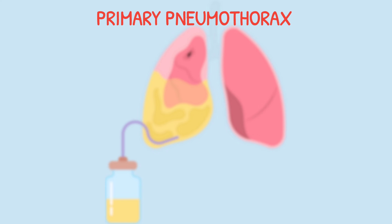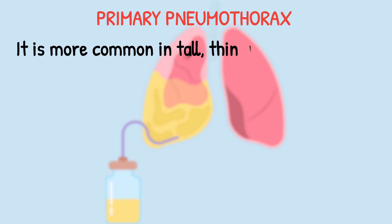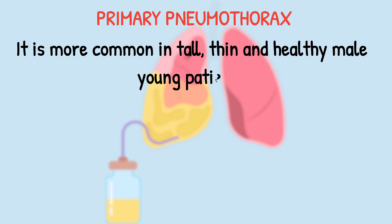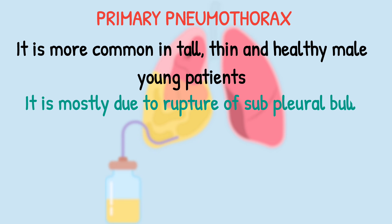In primary pneumothorax, the typical patient is a tall, thin, healthy young male. They are usually very fit and suddenly develop chest pain and shortness of breath, mostly due to rupture of a sub-pleural bulla.